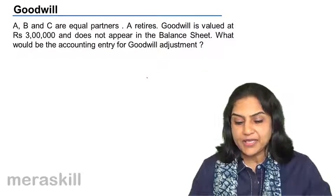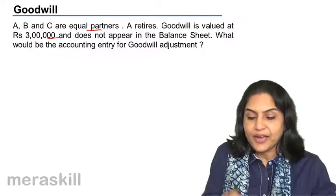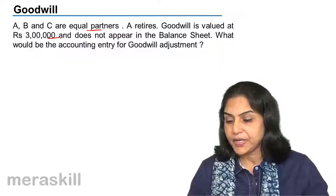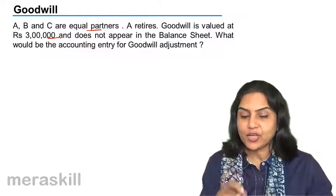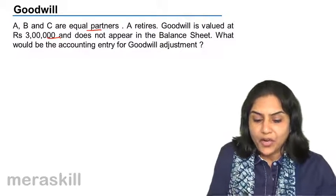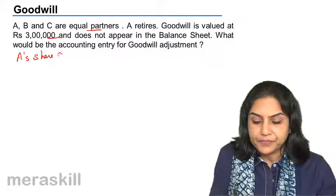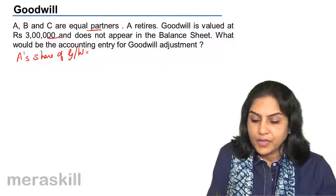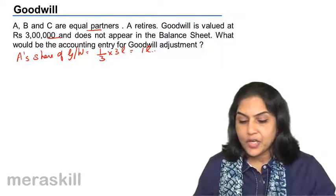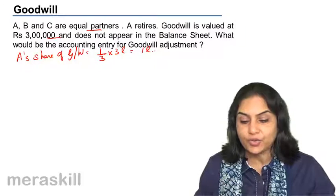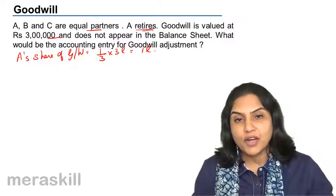Let us take an example. A, B and C are equal partners. A retires. Goodwill is valued at 3 lakh and does not appear in the balance sheet. What is the entry for goodwill adjustment? A retires. What is his share of goodwill? One third of 3 lakh. A's share of goodwill is equal to one third of 3 lakh, which equals 1 lakh. So this amount needs to be credited to A's account since A is retiring.